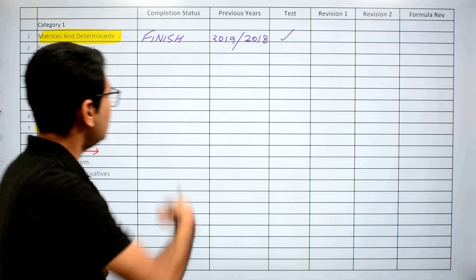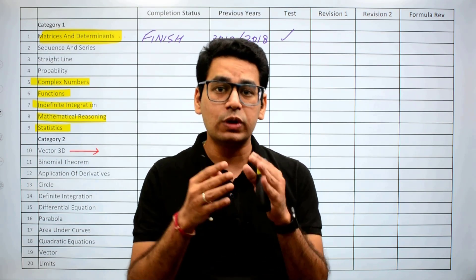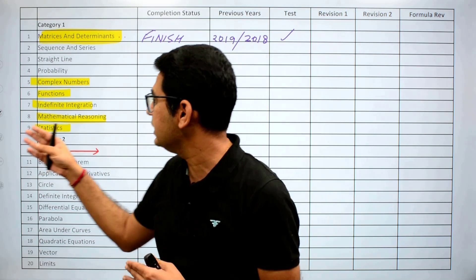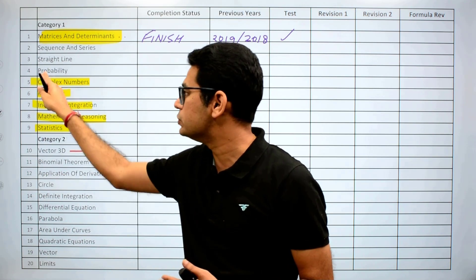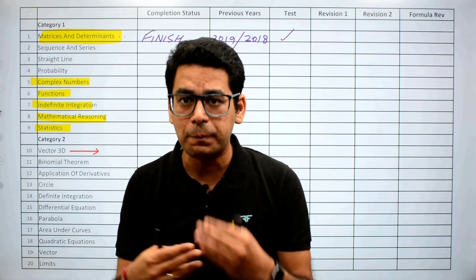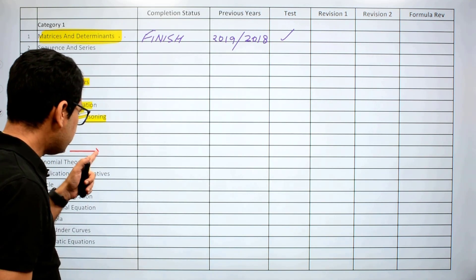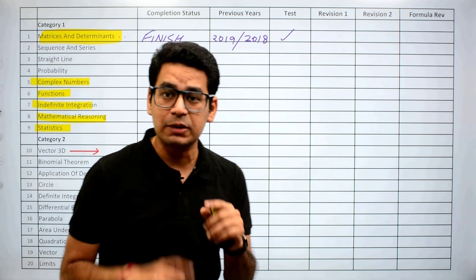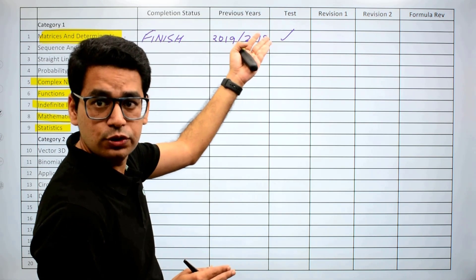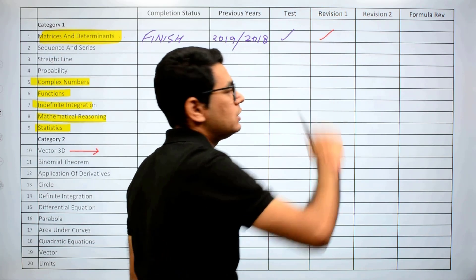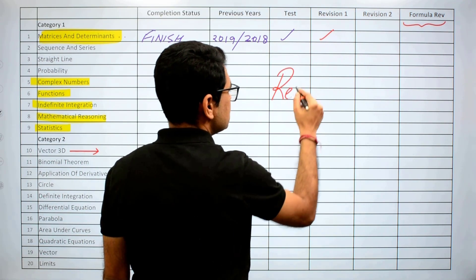It is not necessary to go in a serial order. You must be good at some chapters and not so good at others — you can decide accordingly and leave out some chapters. For example, if complex numbers are not clicking but you have a good hold of vector 3D, you can swap them — finish vector 3D first. This is based on your personal preference. Once you have started vector 3D, take some time out for revision of matrices and determinants, since you did those first.